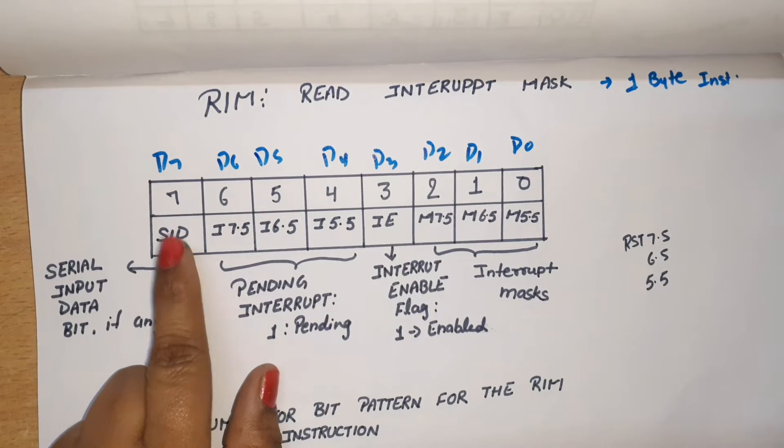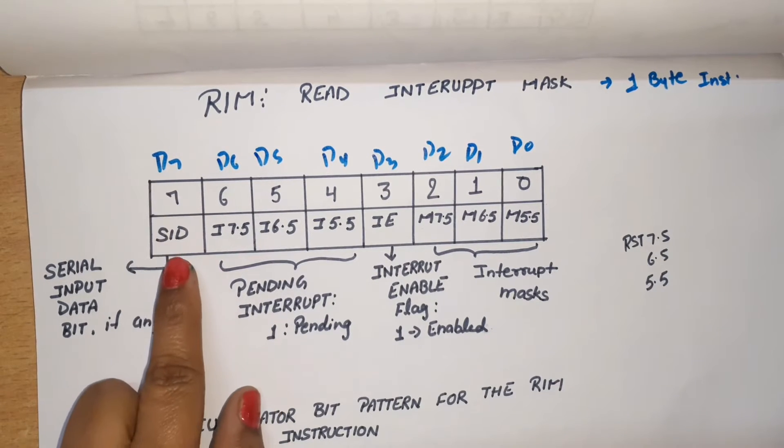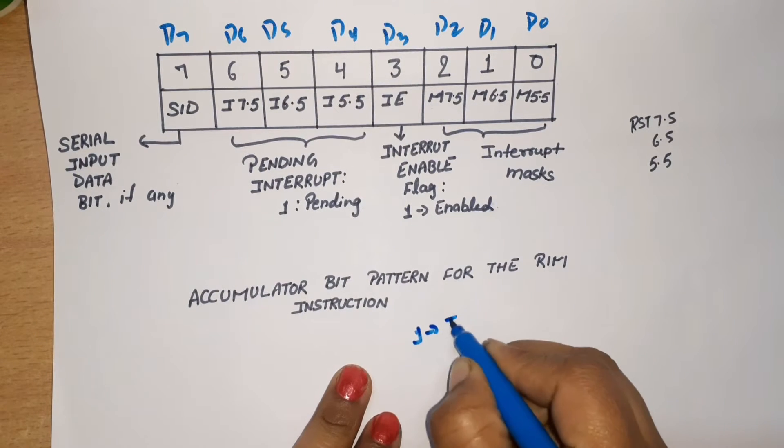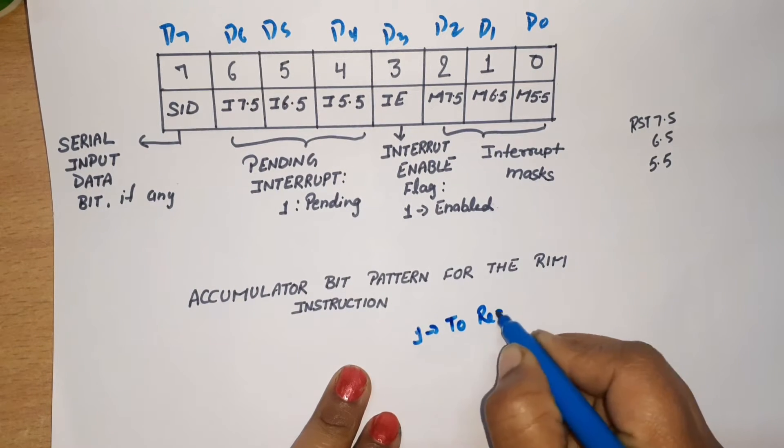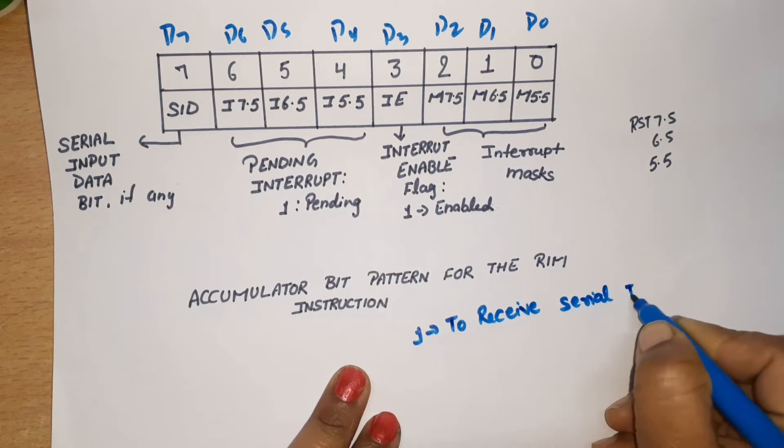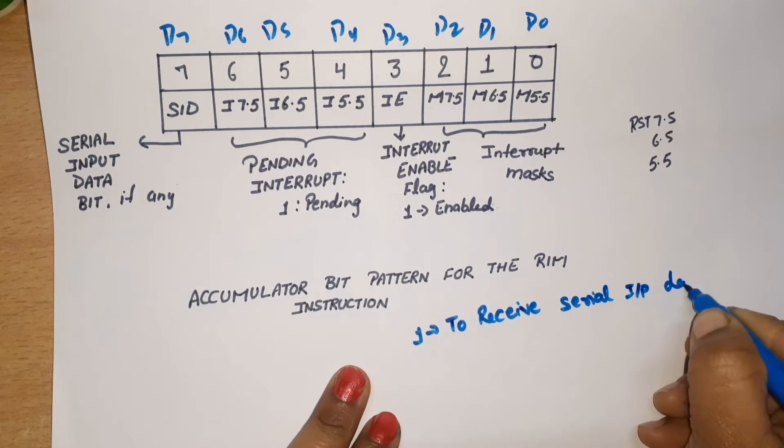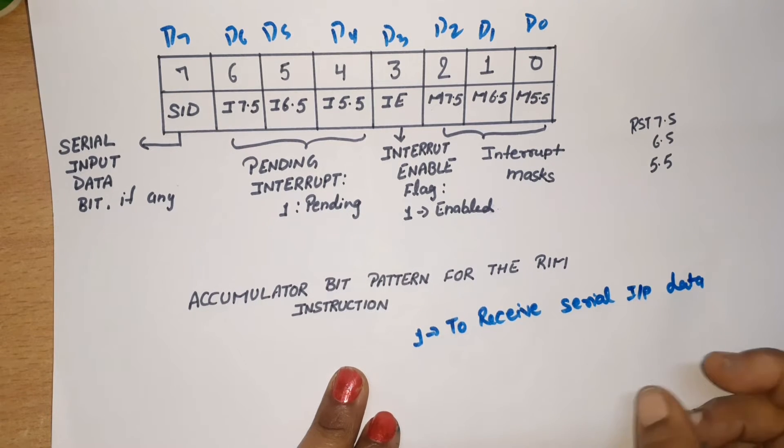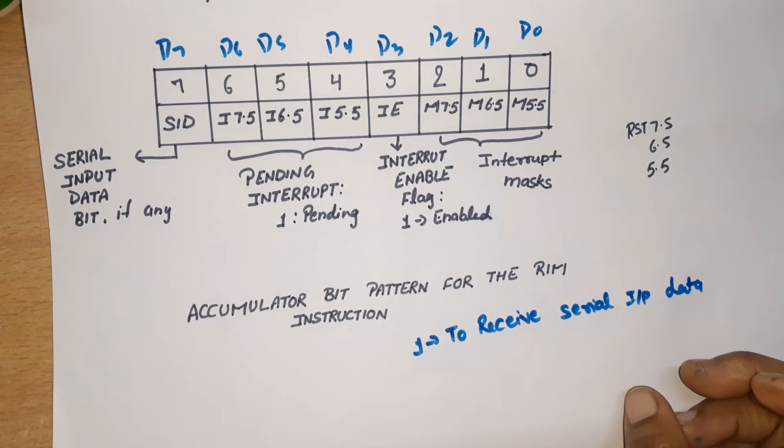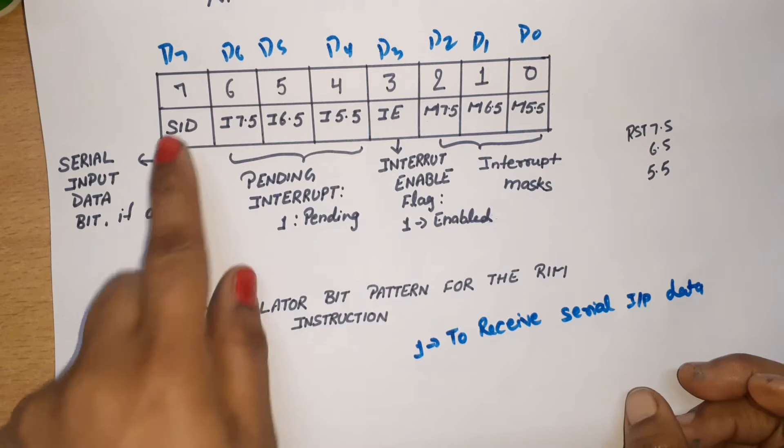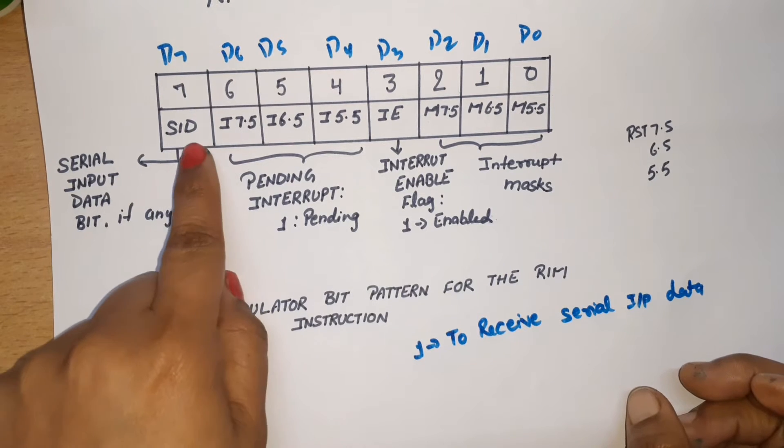The first function is to receive serial input data. When a microprocessor is connected to an input device, the data that comes is received through the SID pin. If any data is sent by any input device, this bit receives the data.